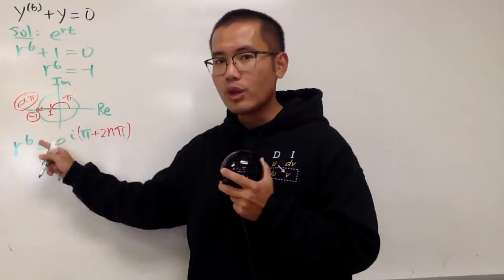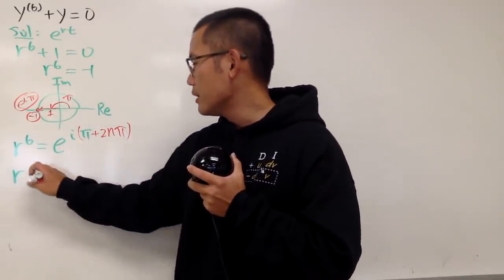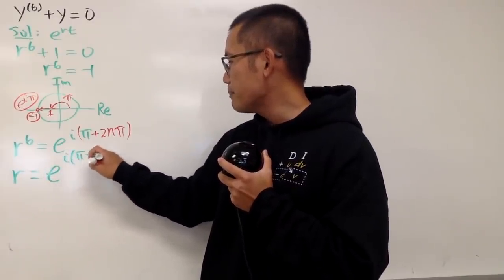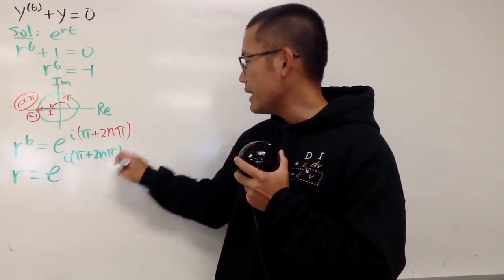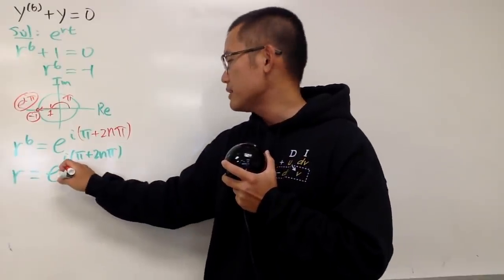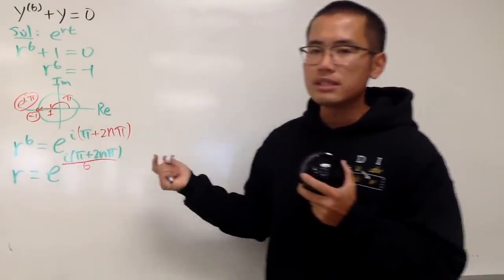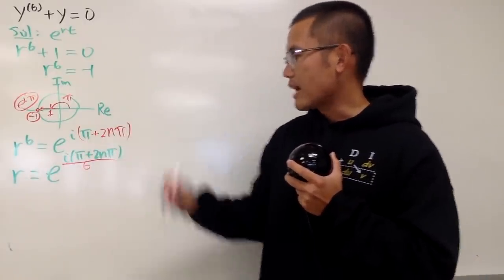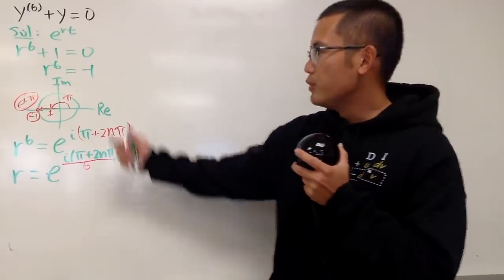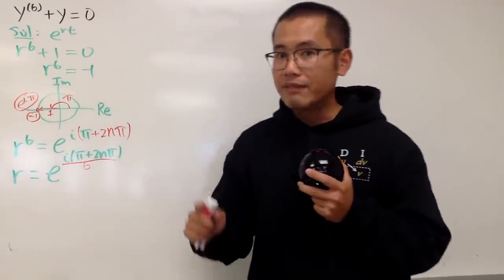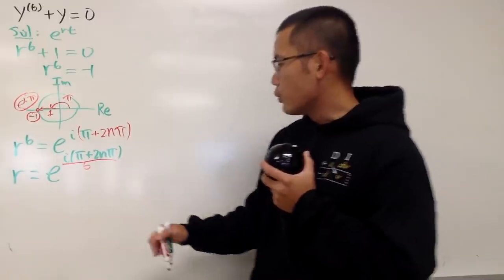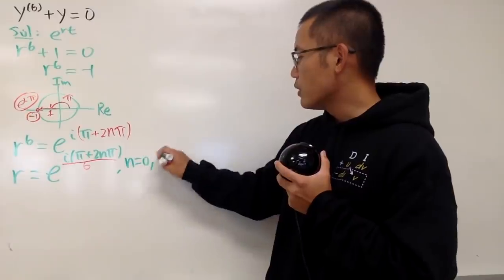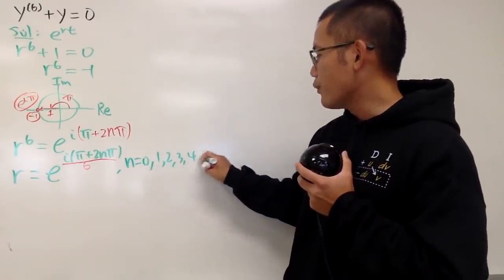You can just raise both sides to the 1 over 6th power, and that will give us r is equal to e to the i times (pi plus 2n pi), divided by 6 — because we raise both sides to the 1 over 6th power, so we just divide both sides by 6 for the exponent. If you look at this right here, we will have a total of 6 solutions. For this to work, n will go from 0, 1, 2, 3, 4, 5 — and that will give you the whole 6 solutions.